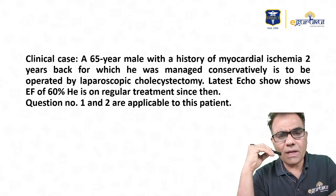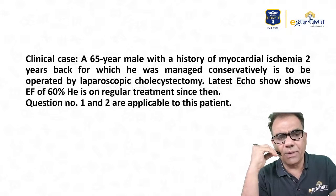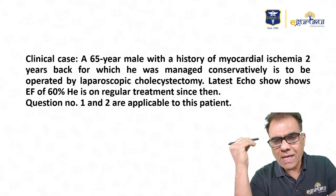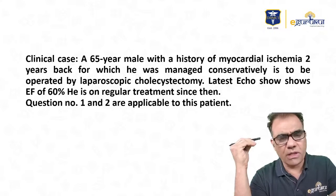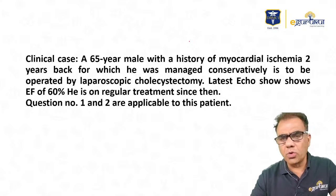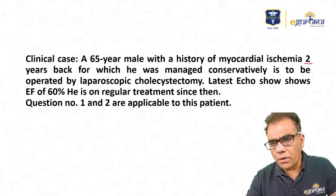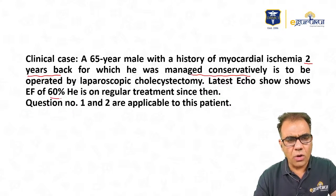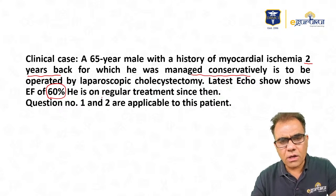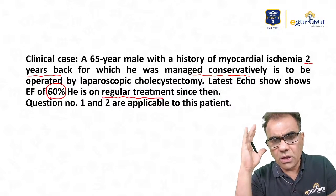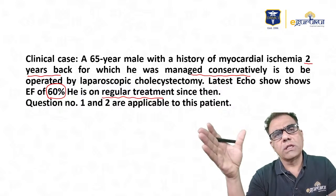Question number 1 — a clinical case. A 65-year male with a history of myocardial ischemia 2 years back, for which he was managed conservatively, is to be operated for laparoscopic cholecystectomy. Latest echo shows ejection fraction of 60%. He is on regular treatment since then. Important things to note: history is quite old — 2 years — managed conservatively, ejection fraction is normal, and he is on regular treatment. So more or less this patient is on controlled disease.